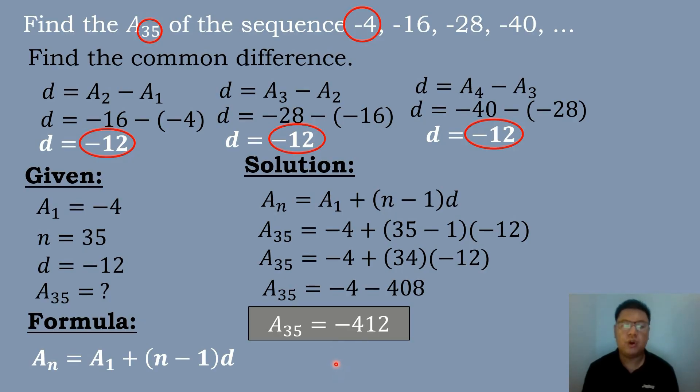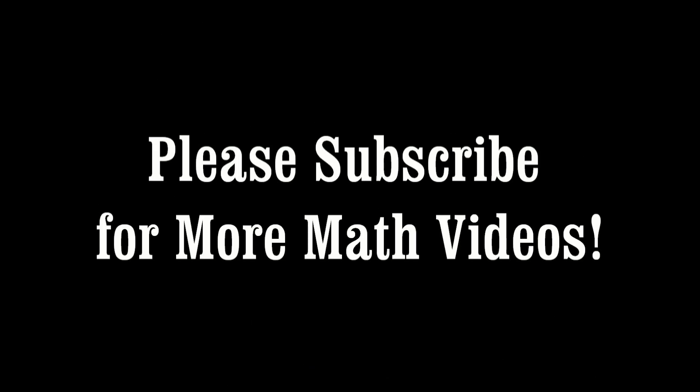So the value of the 35th term is negative 412.